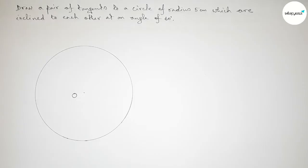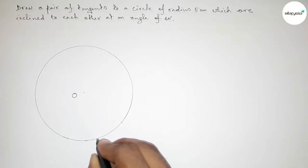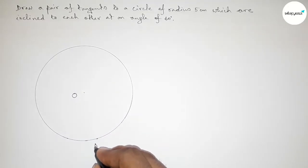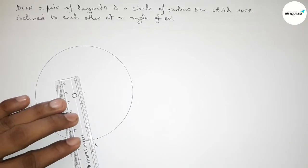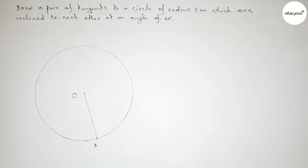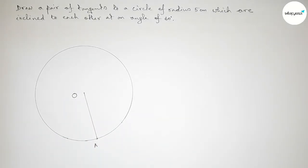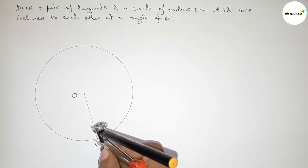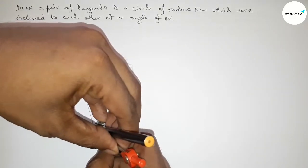Now taking a point on the circumference — taking any point A. Next, joining O and A. Now we have to draw a 90 degree angle on point A, so putting the compass on point A and taking any length.